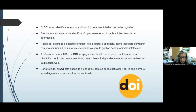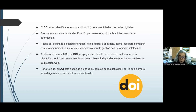Un nombre DOI puede ser asignado a cualquier entidad, sea física, digital o abstracta, sobre todo para compartir con una comunidad de usuarios interesados o para la gestión de la propiedad intelectual. A diferencia de la URL, un DOI se apega al contenido de un objeto en línea, no a la ubicación. Por lo que queda asociado con un objeto independientemente de los cambios que se hagan en la dirección de él. El DOI está asociado a una URL, pero esta se puede actualizar, por lo que siempre se redirige a la ubicación actual del contenido.